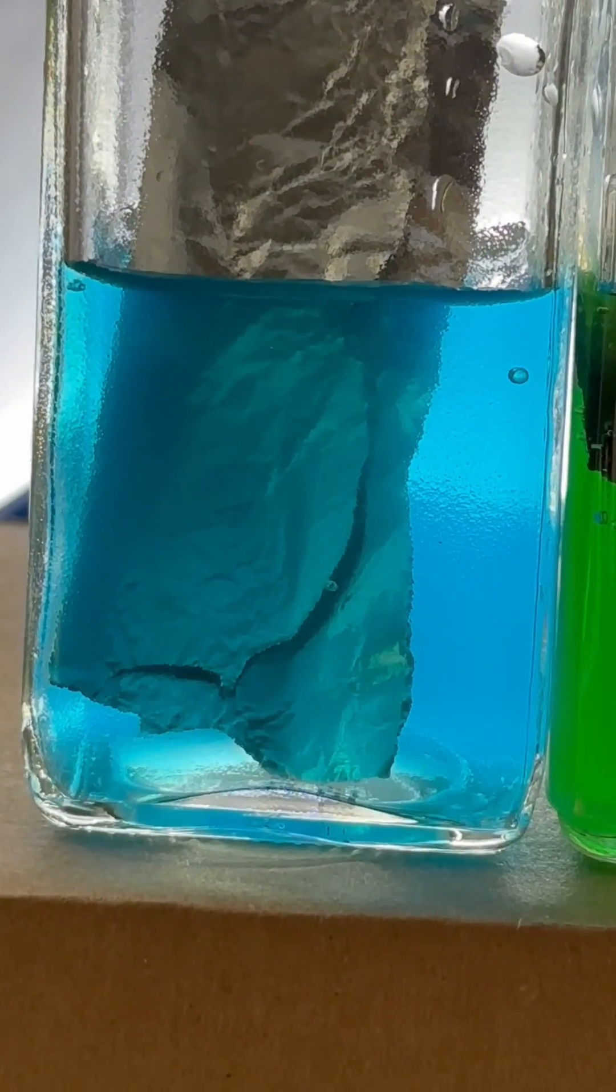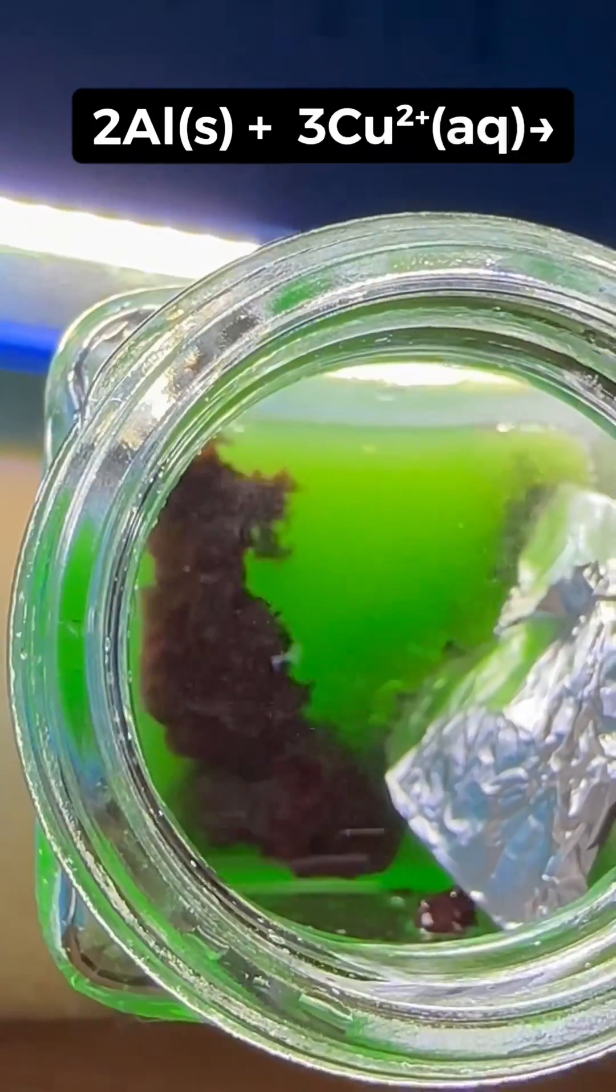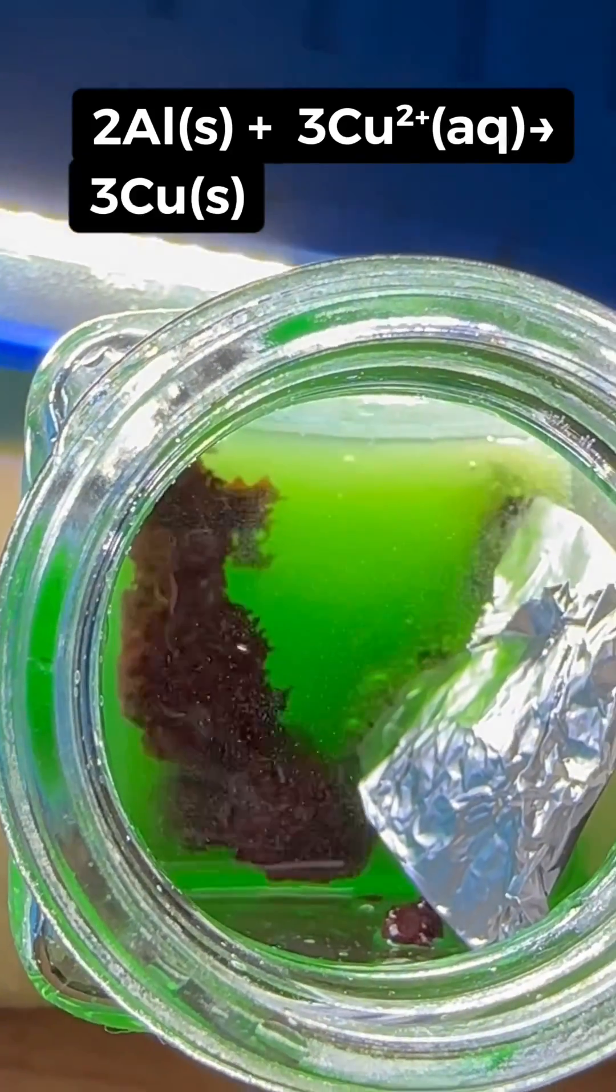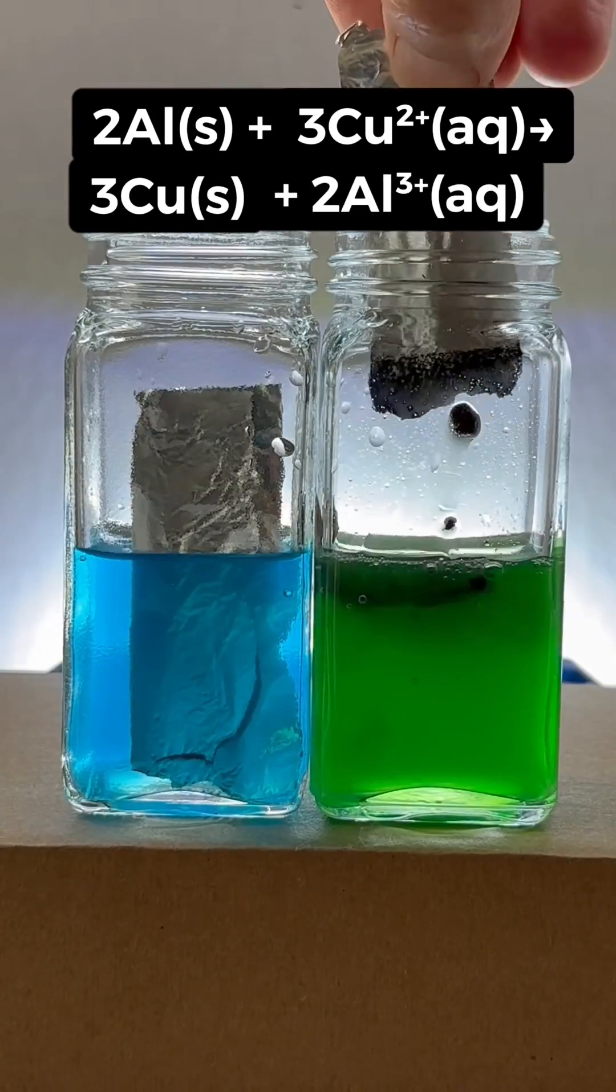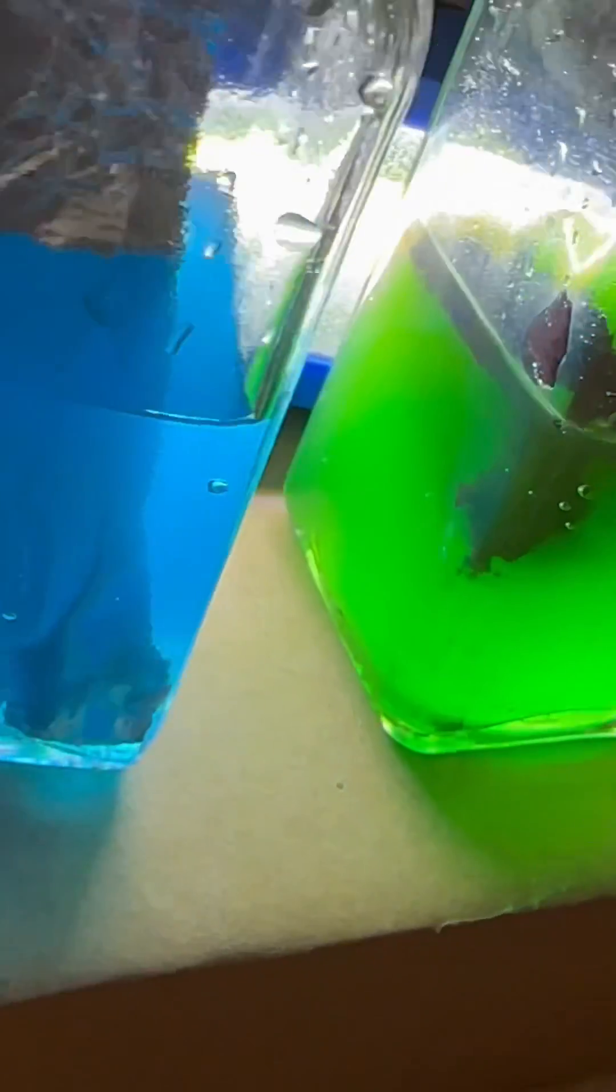But nothing's happened in the copper solution that doesn't contain salt. Aluminum metal will react with copper ions in solution to produce copper metal, and this process dissolves the aluminum. But it's pretty clear this same reaction doesn't happen in the copper solution that does not contain salt.